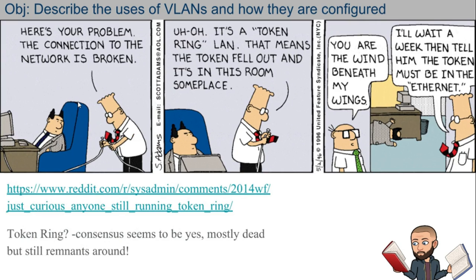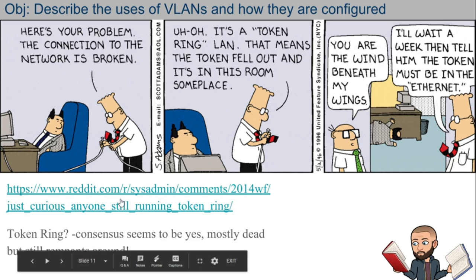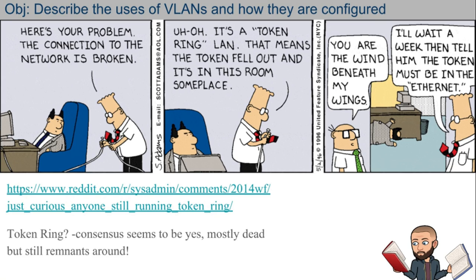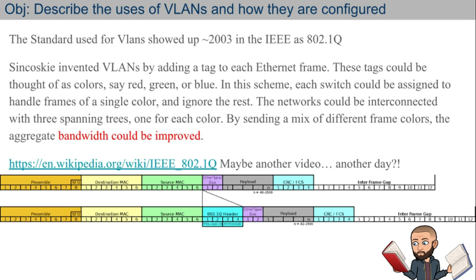For some humor relief — there's a funny Dilbert comic about network topology. It says: 'Here's your problem, the connection to the network is broken. It's a token ring LAN, so that means the token fell out and it's in this room someplace.' The boss goes looking for it with no idea what a token ring network is. Dilbert ends with: 'I'll wait a week and then tell him the token must be in the ethernet.' I did some research — according to the sysadmin subreddit, token ring is still used, but very rarely.